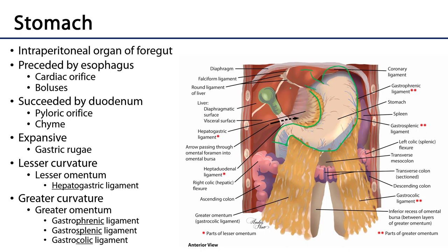The stomach is preceded by the esophagus. Boluses — food mixed with saliva — traverse the esophagus and enter into the stomach for further digestion. They enter at the cardiac orifice, and succeeding the stomach in the processes of digestion, chyme — that transformed substance from the bolus — is ejected through the pyloric orifice through the pyloric sphincter into the duodenum.